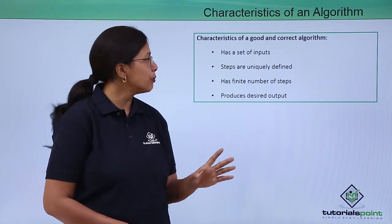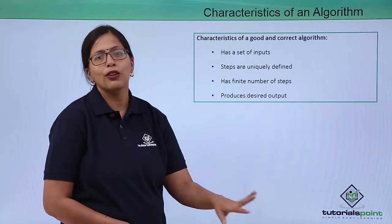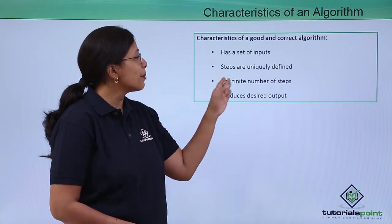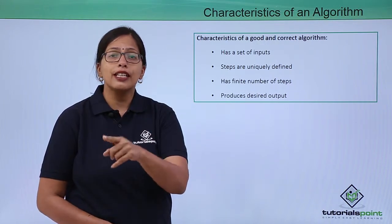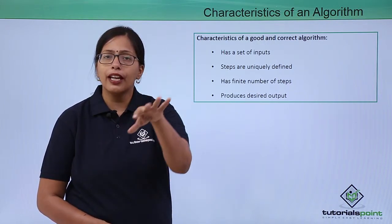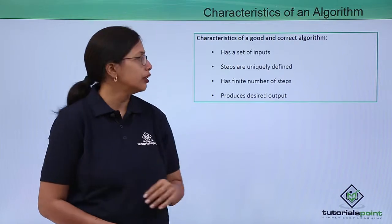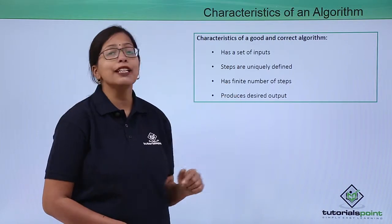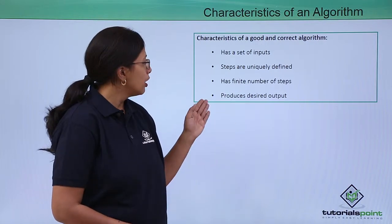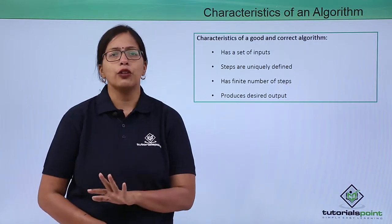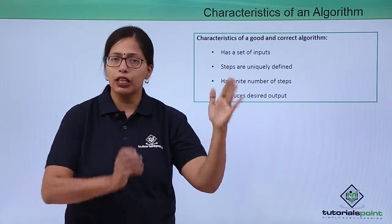Steps are uniquely defined. Each step is unique in itself, not repeated anywhere else in the algorithm. It has a finite number of steps. You cannot have infinite number of steps. It produces the desired output. So it will have some input, it will follow a finite number of steps, and get the desired output.